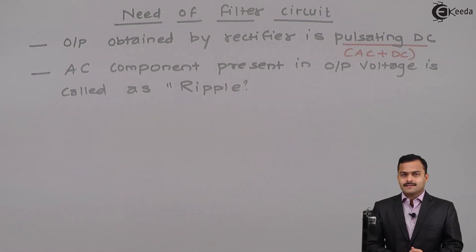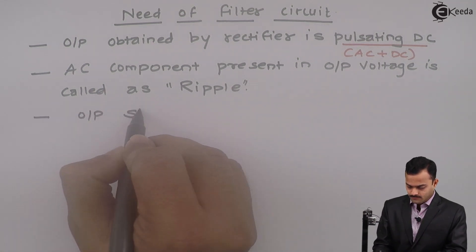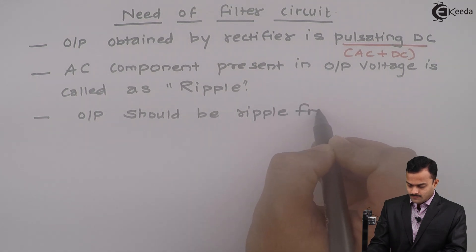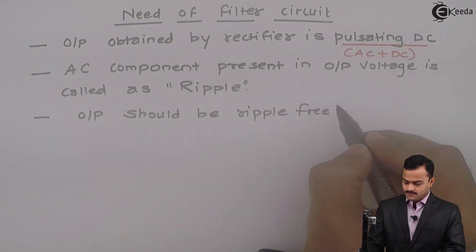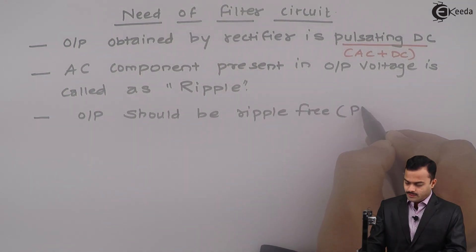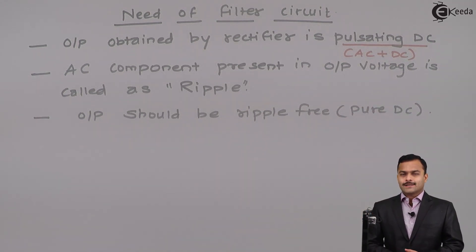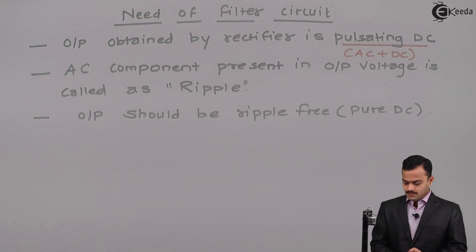Our job is to get output voltage ripple free. What do you mean by ripple free? It is pure DC because most of the electronic circuits require pure DC voltage. So, in order to remove this ripple, we use filter.